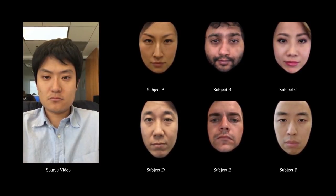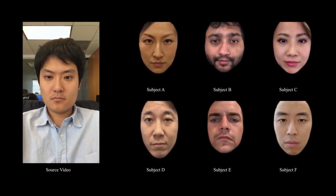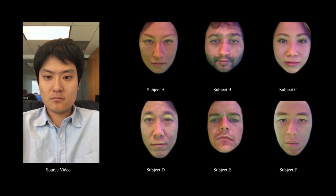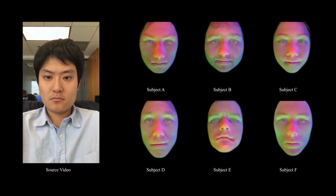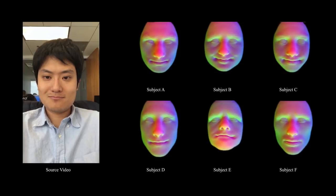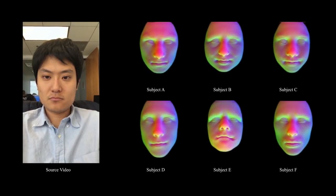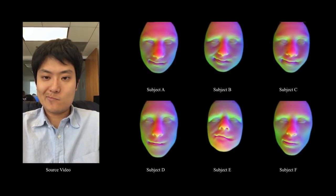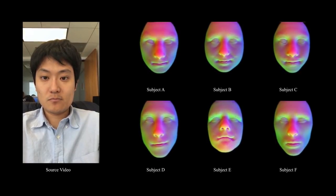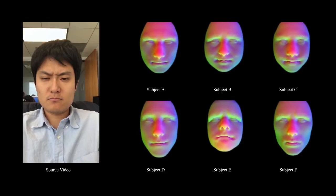We use a conditional generative adversarial network to provide fine-scale control of dynamic facial appearance. We show a subset of pixel-wise conditioning images used in the synthesis.